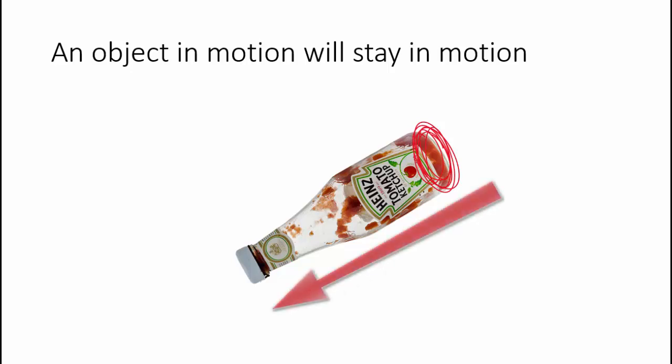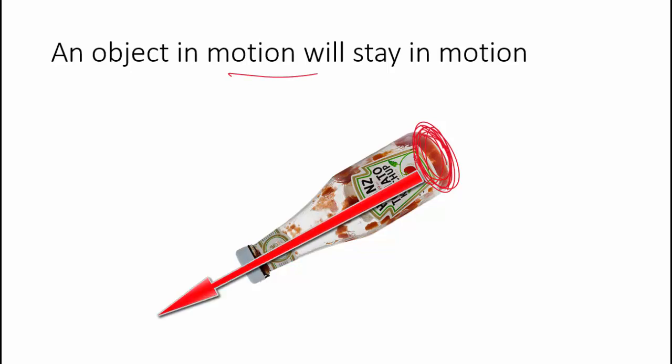You have ketchup that is down here in the bottom. And when you move the bottle really quickly, everything inside the bottle is moving. So an object in motion will stay in motion. Now when you stop the bottle at the bottom, the ketchup is not part of the bottle. So the ketchup, an object in motion, will stay in motion. And if you're lucky, the ketchup will keep moving that direction until it leaves the bottle.